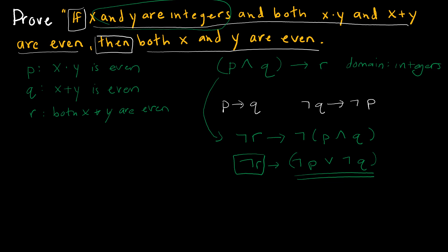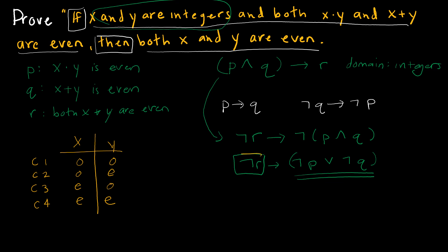Now, since this is a proof by cases, let's think about what my cases are. I could have: X is odd and Y is odd, X is odd and Y is even, X is even and Y is odd, or X is even and Y is even. So you might say we've got four cases. But that's not quite the case — I am assuming not R. R says both X and Y are even, so I'm assuming that's not the case. Case four is not a possibility, leaving me three cases.